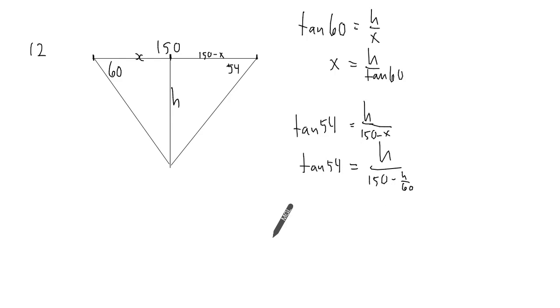What I'm going to end up with, cross multiplying, tan of 54 times 150 minus tan of 54 times h over tan 60. That's going to equal h.